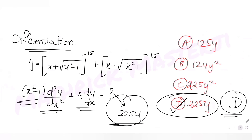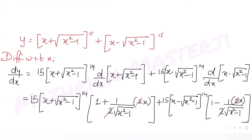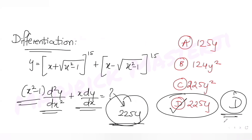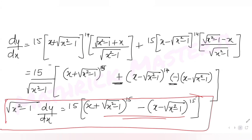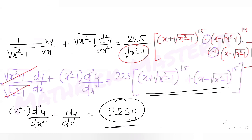To summarize: we found the first derivative, simplified it, then differentiated again to get the final result matching option D. This is part of a daily series of JEE Mains questions. If you're enjoying these videos, please like, subscribe, and share with friends preparing for JEE.